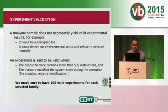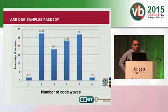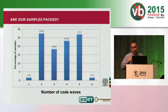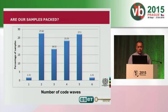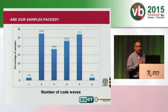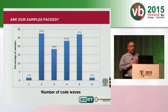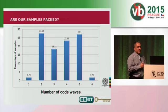On to the results. The first question is: of all the samples, how deep was the packing process — how many successful waves of unpacking were there? The graph shows the percentage of samples for which there was code in a certain wave. Only 1.72%, a very small number, had only one wave — meaning just one iteration through the packing process. Most samples had at least two to five different waves, so they were relatively sophisticated in terms of packing iterations.